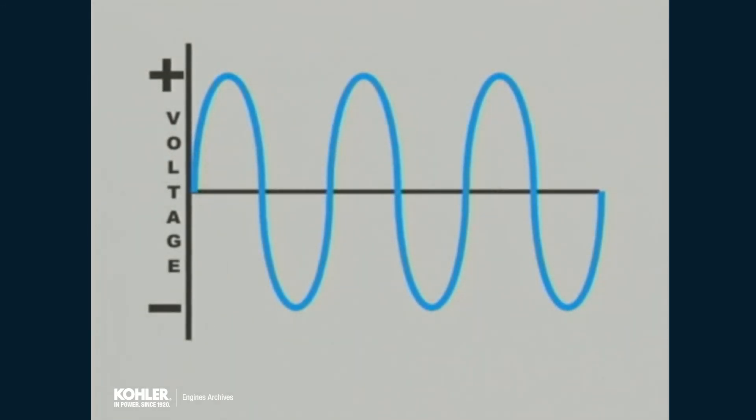The rectifier converts the alternating current into a continuous stream of positive voltage pulses, which is used by the electrical system.